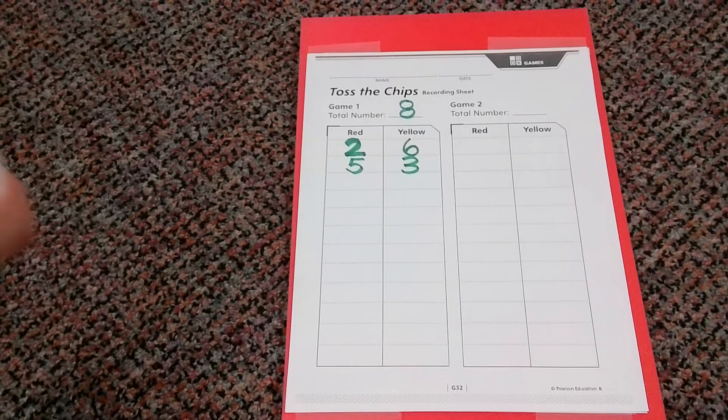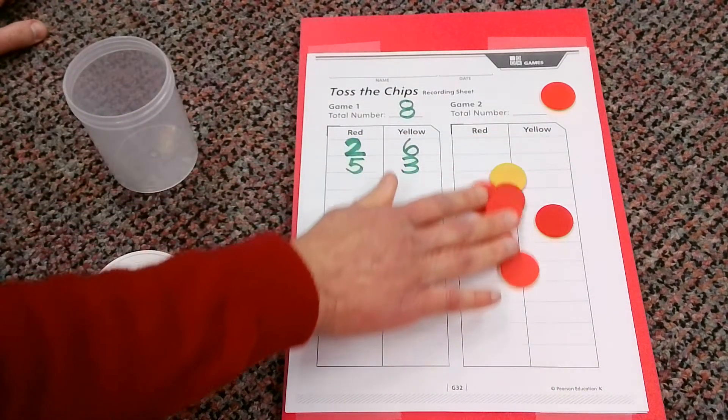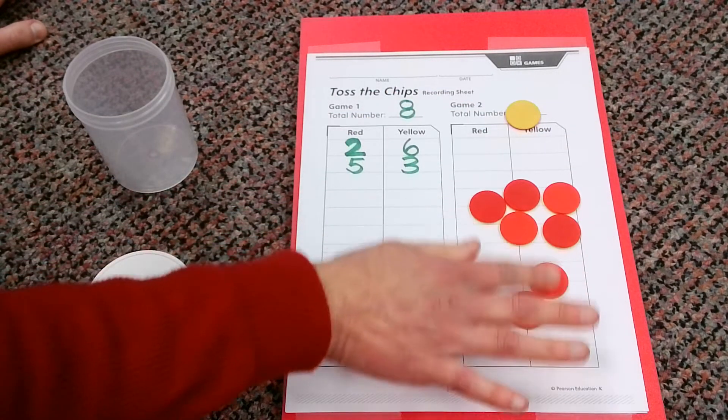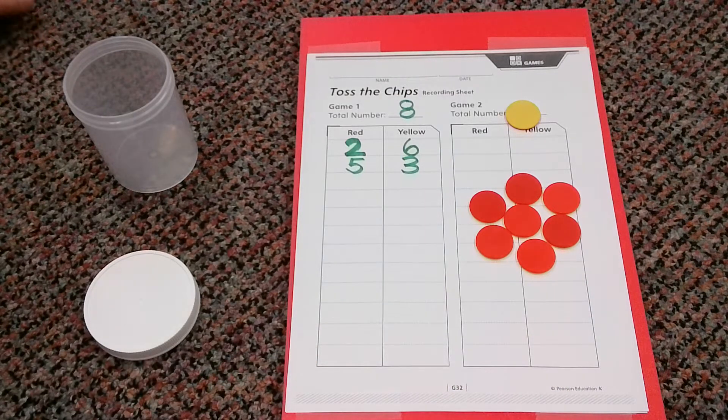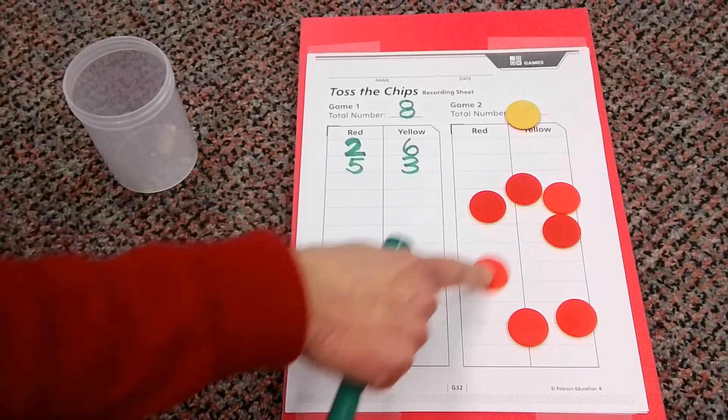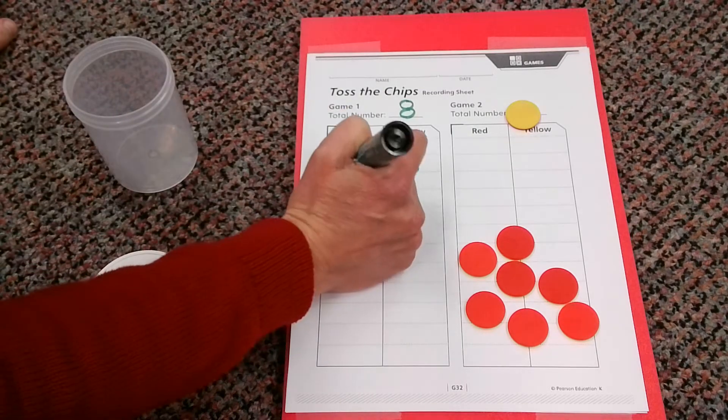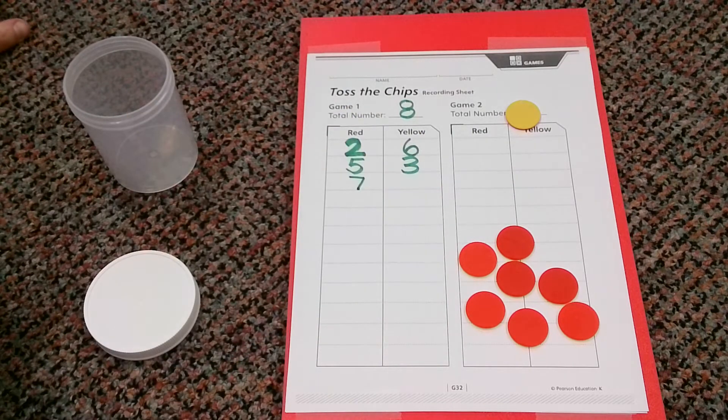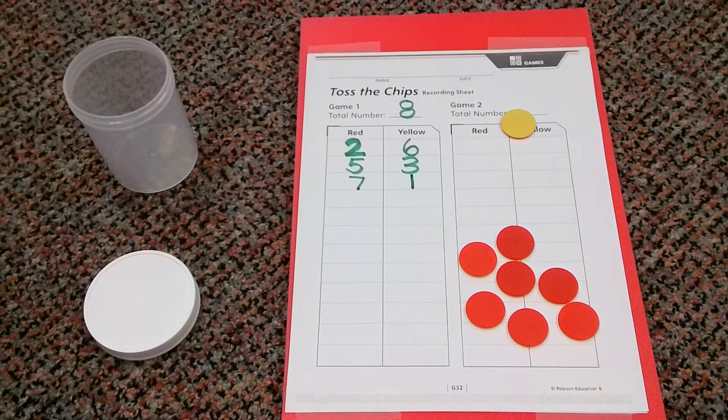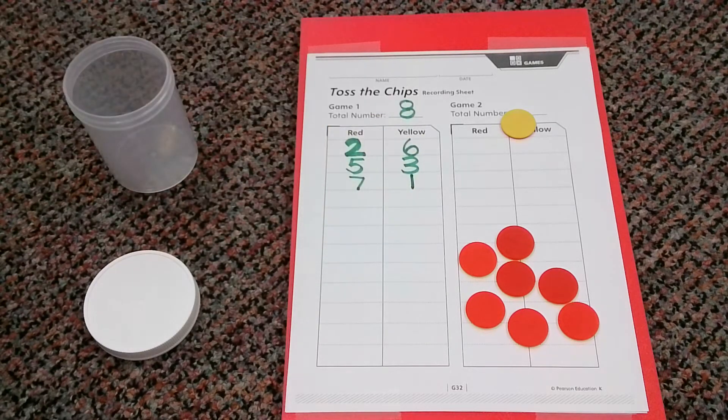All right, let's find another combination. Oh boy, we have more red this time for sure. Let's go ahead, let's count our red. One, two, three, four, five, six, seven. And how many yellow do we have? Oh, only one. So this combination would be seven plus one equals eight.